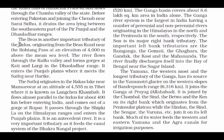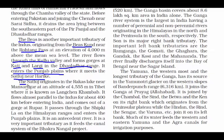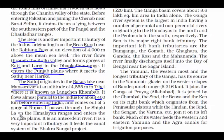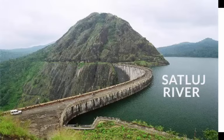The fourth tributary of the Indus is the Beas. It starts from the Beas Kund near the Rohtang Pass, flows through the Kullu Valley, and forms gorges at Kati Largi in the Dhauladhar range. When it enters the Punjab Plain, it meets the river Satlaj near Harike. The Satlaj starts from Rakas Lake near Mansarovar — known as Langchen Khambab in Tibet — flows parallel to the Indus for about 400 km before entering India through Shipkila, and is an antecedent river. It feeds the canal system of the Bhakra Nangal project.